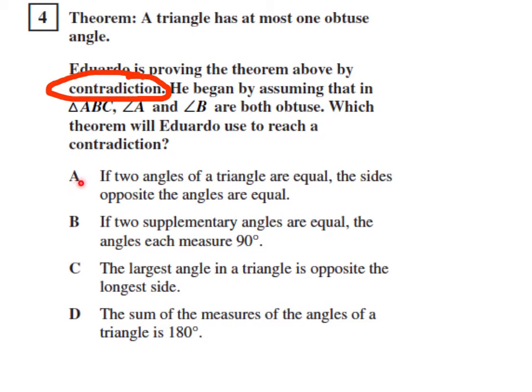Okay, on problem A here, if two angles of a triangle are equal, the sides opposite the angles are equal. You know, this is a true statement. It doesn't necessarily help us with our problem, though.